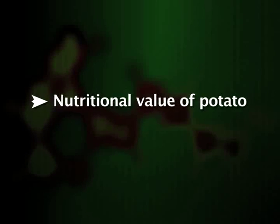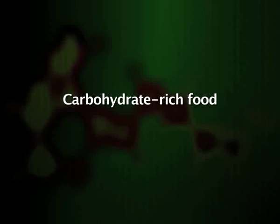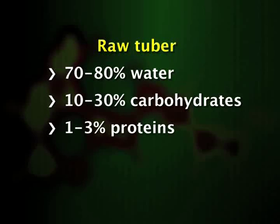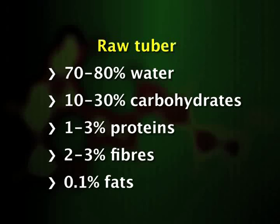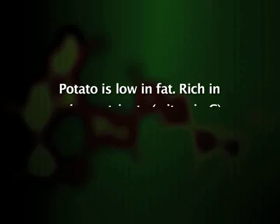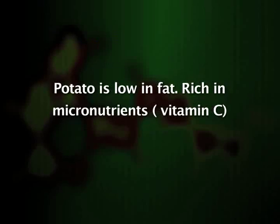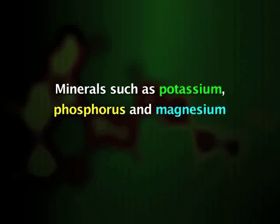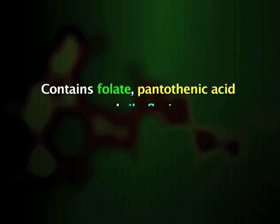Potato is a versatile, carbohydrate-rich food, highly popular worldwide and prepared in a variety of ways. It is one of the cheapest sources of starchy food. The raw tuber contains 70–80% water, 10–30% carbohydrates, 1–3% proteins, 2–3% fiber and 0.1% fats. The potato is low in fat and rich in several micronutrients, especially vitamin C. It is a moderate source of iron, and its high vitamin C content promotes iron absorption. It is a good source of vitamins B1, B3 and B6 and minerals such as potassium, phosphorus and magnesium, and contains folate, pantothenic acid and riboflavin.